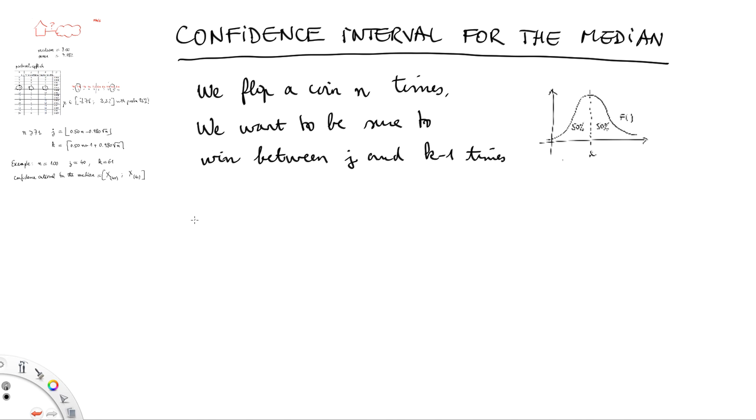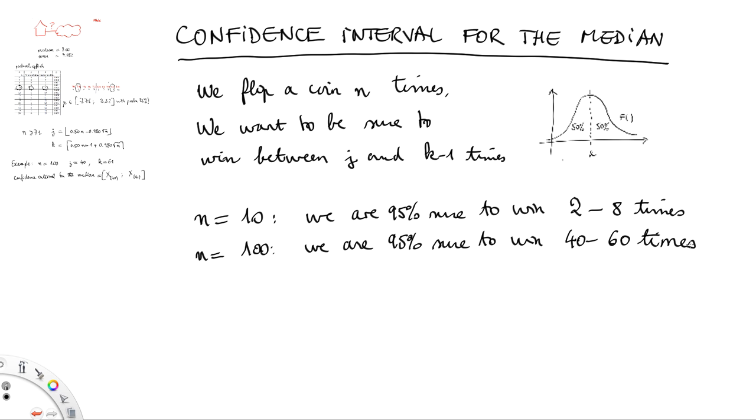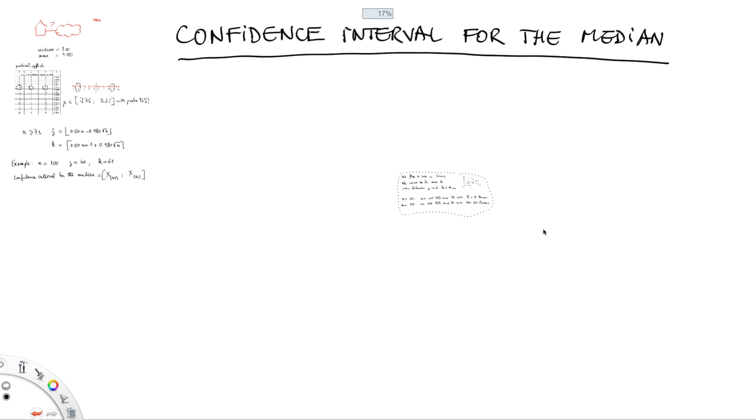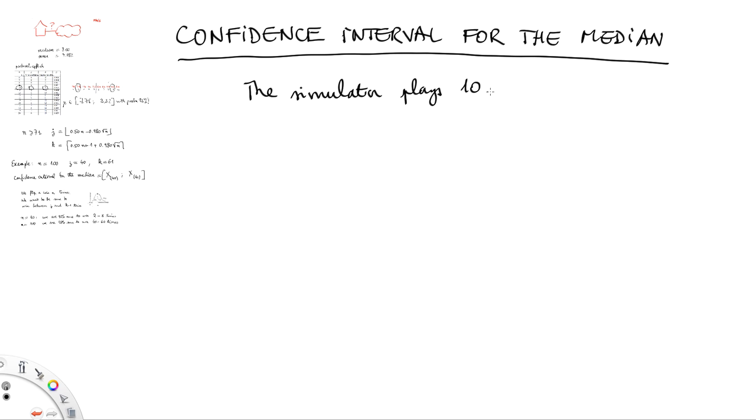For example, if n equals 10, we flip a coin 10 times, we are 95% sure that we will win between 2 and 8 times. If we flip the same coin 100 times, we can say that with at least 95% probability, we will win between 40 to 60 times. Now, how is this related to the median? Let's introduce a coin flipping game. The simulator is playing 10 values. Let me call them x1, x2, x10. For each of them, I say that I win if it is less than or equal to the median. Otherwise, I lose. So there will be 10 outcomes.